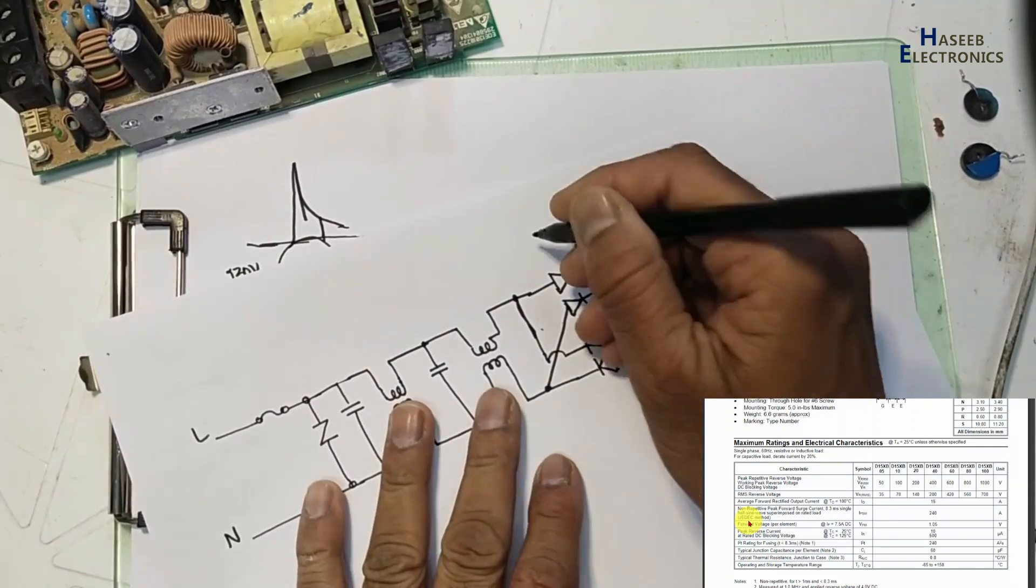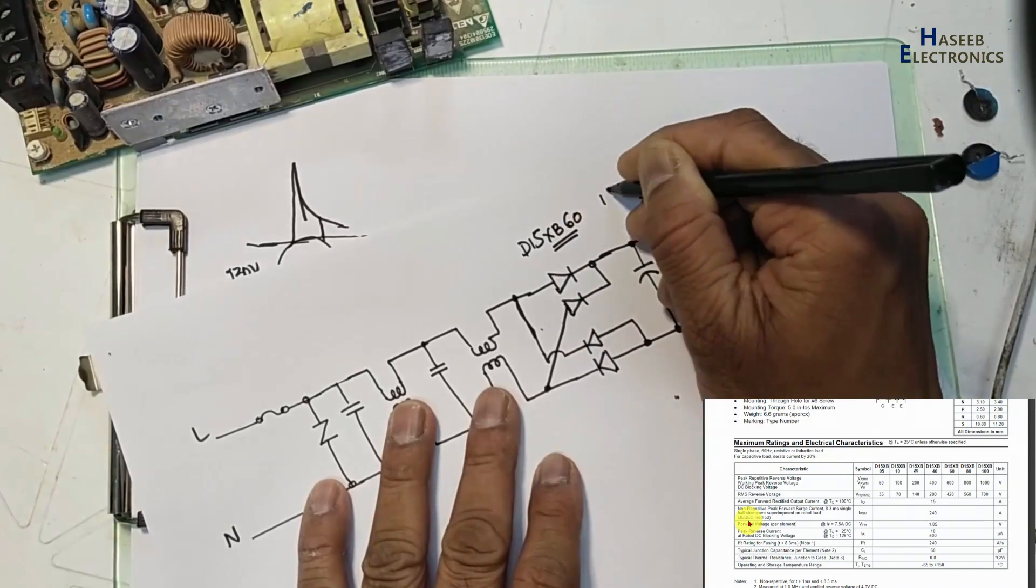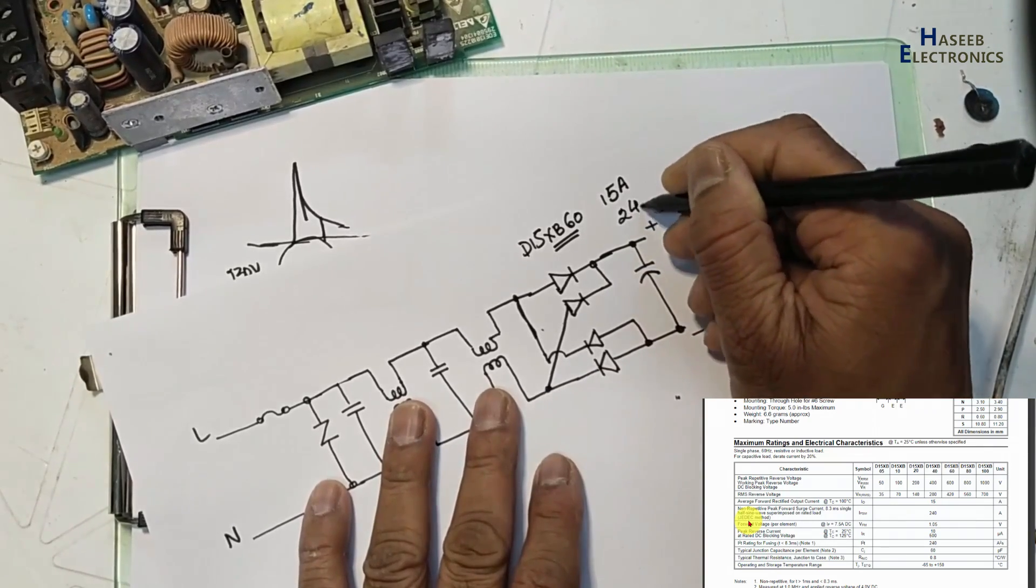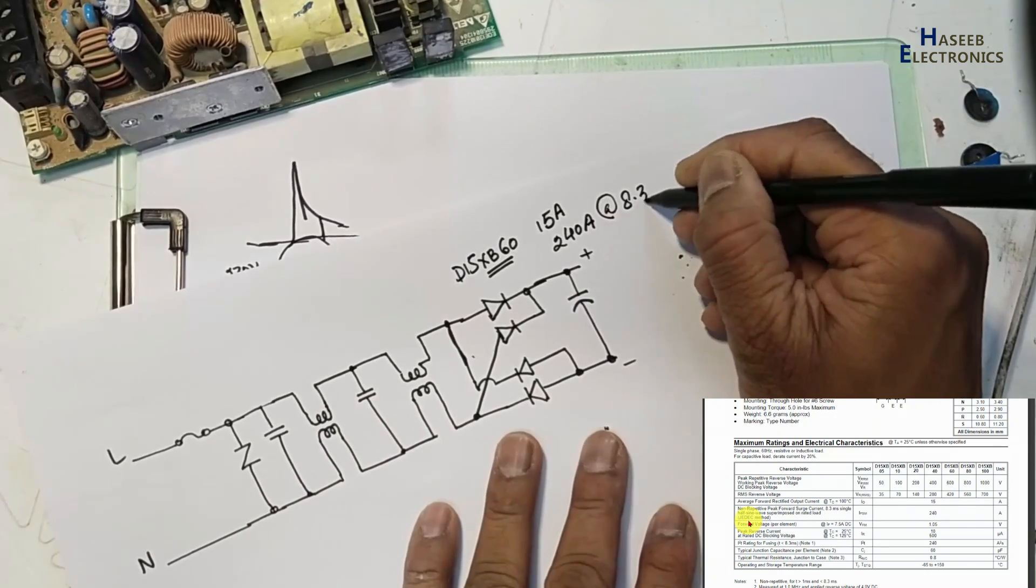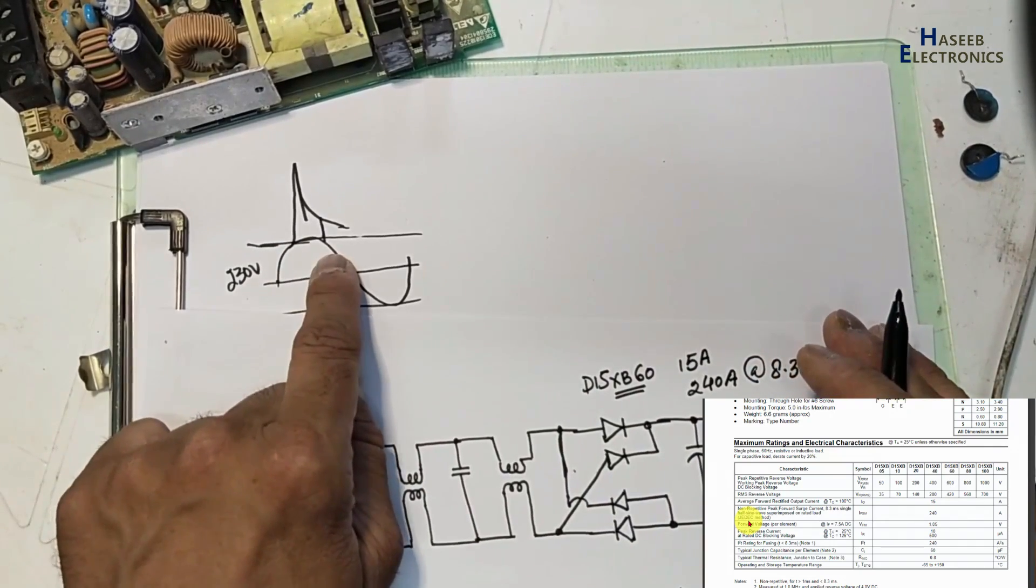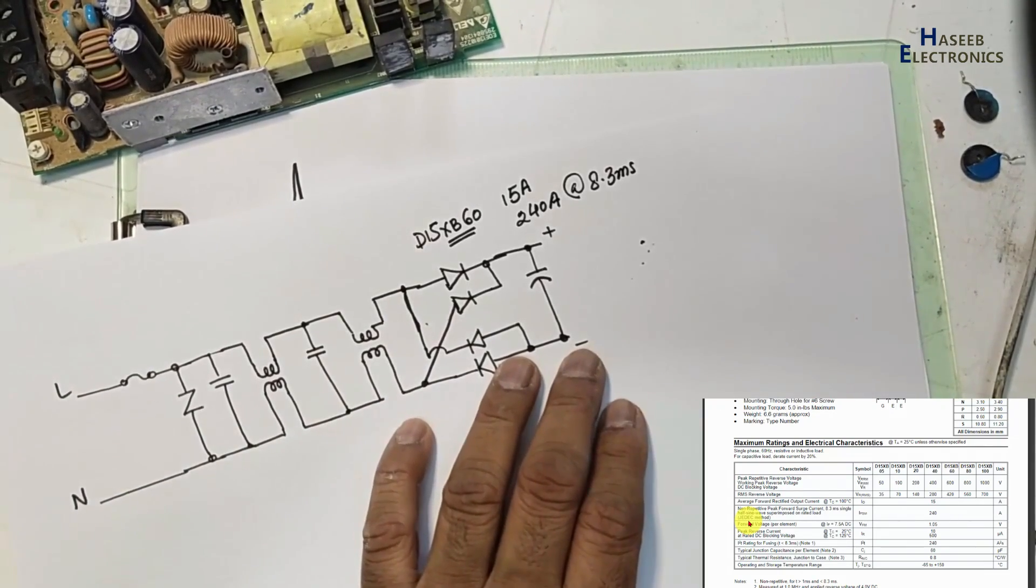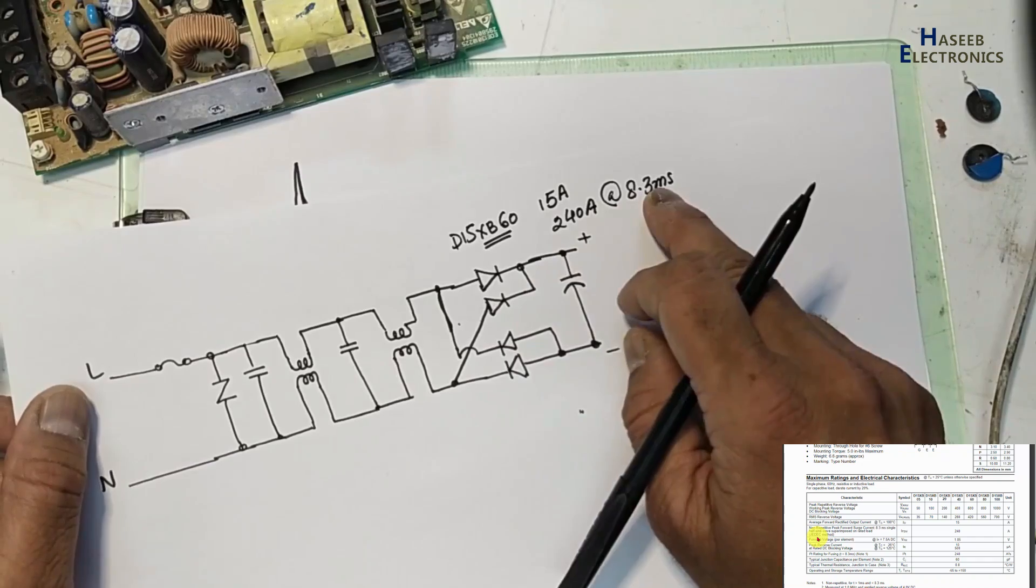And this bridge rectifier D15XB60 - normal current 15 ampere, that is continuous current. But 240 ampere current for 8.3 milliseconds. Just only in one peak, a very short duration pulse. After that it will break down, it will damage. Non-repetitive peak forward surge current - single half sine wave superimposed on rated load. After 8.3 milliseconds, this will damage.